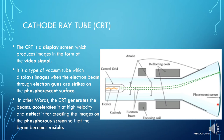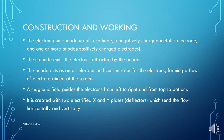Now let's see what components are there. There are deflecting coils, also called deflectors, and X and Y plates which generate an electric field. There is an anode, an electron beam, and a cathode which acts as the electron gun. There is also a control grid and a heater. These are the components of the CRT.